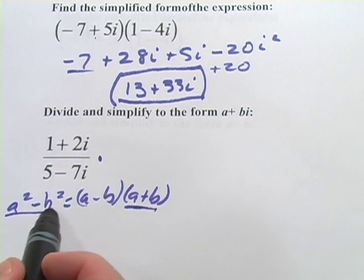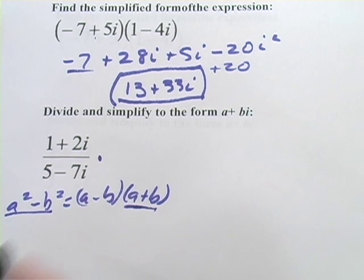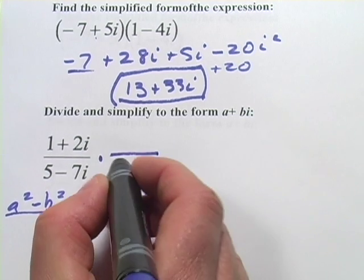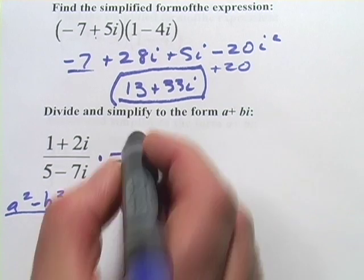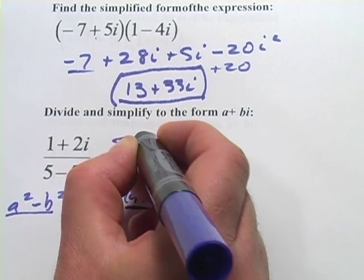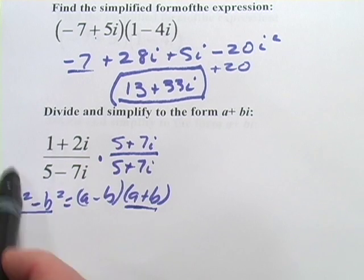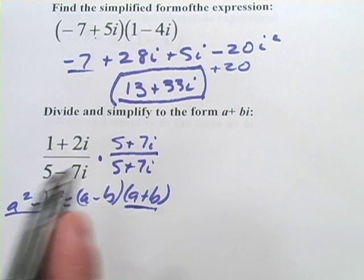And then on the bottom, we'll get this, the a² - b². So on the bottom, we want to multiply by 5 + 7i. And we'll multiply by the same thing on the top, so that we're actually multiplying by 1 and not changing the value of this expression.